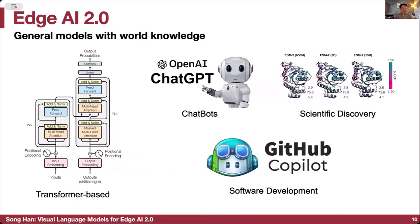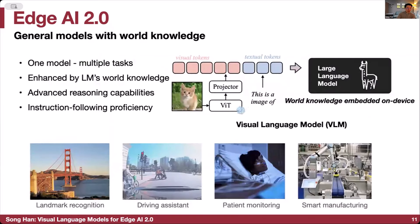AI 2.0 demands that we use general models with world knowledge by using Transformers and large language models' large capacity. We want just one model that can handle multiple different tasks with zero-shot learning capability, enhanced by large language models' world knowledge, advanced reasoning capability, in-context learning capability, few-shot learning capability, and visual chain-of-thought capability.